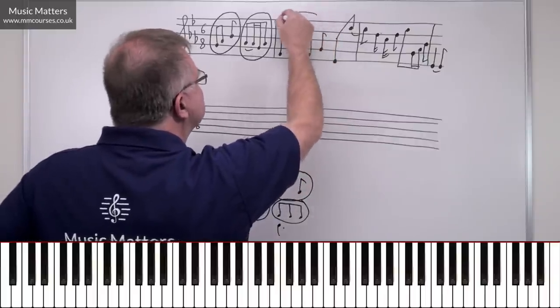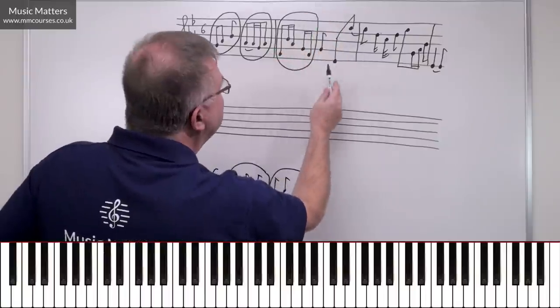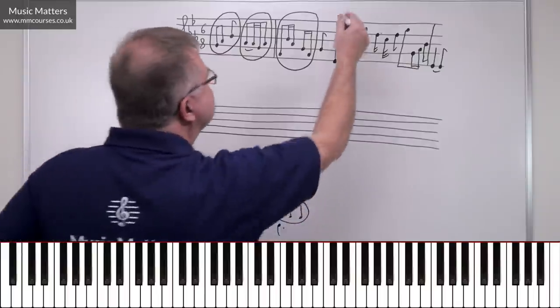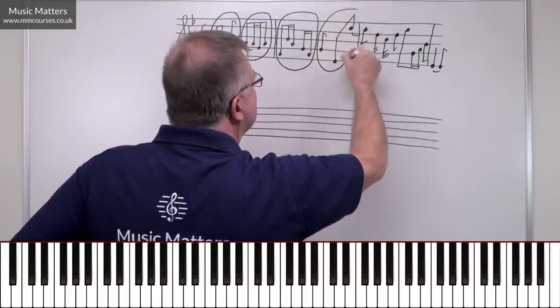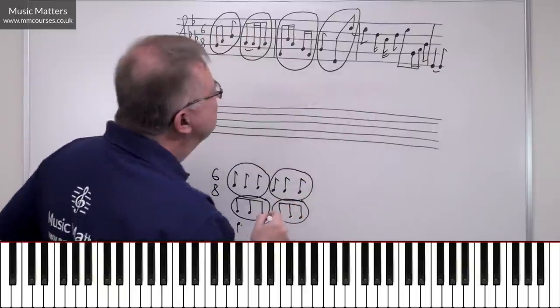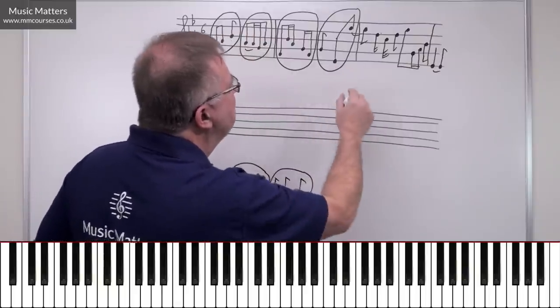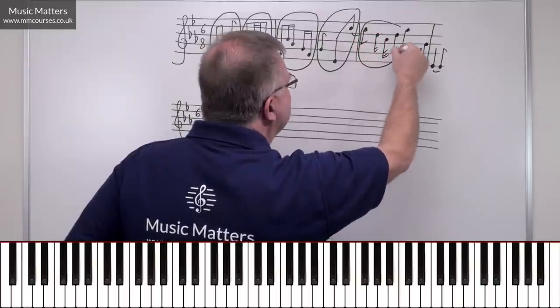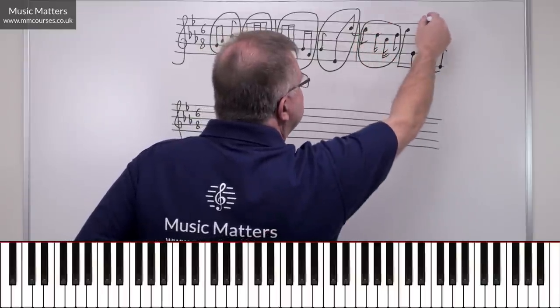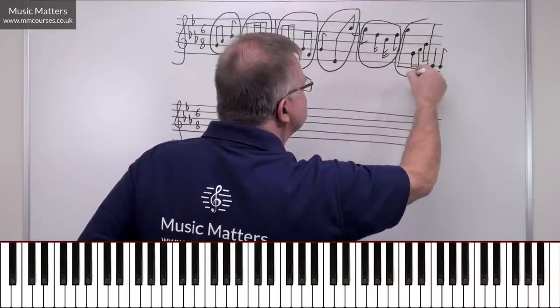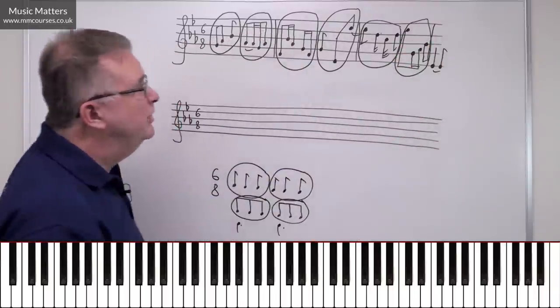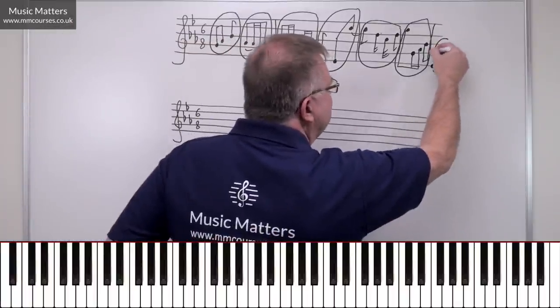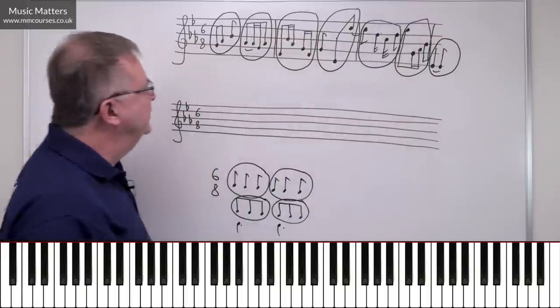And then in the second half of that bar I've got one, two, three quavers, four, five, six, so they're going to go together. Then I've got some more complicated looking rhythm, but if you do the maths here, you'll see that this lot belongs together and this lot belongs together. And we've also got the first beat of the next bar or the next measure, so this adds up to the first beat of the next bar.